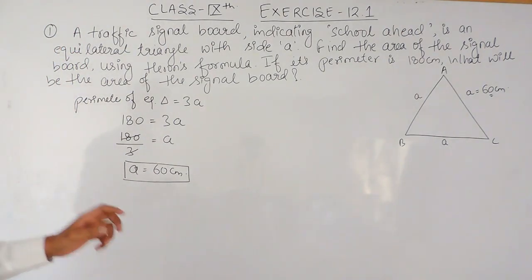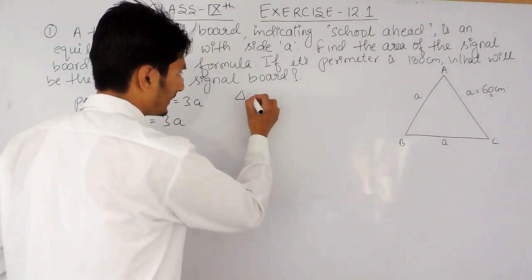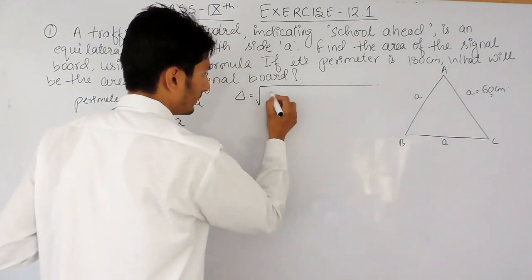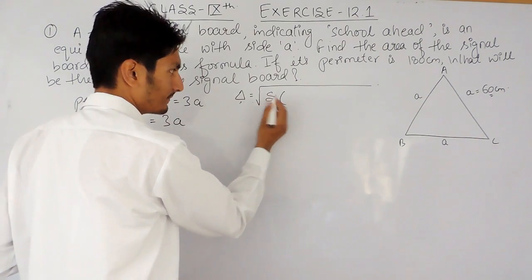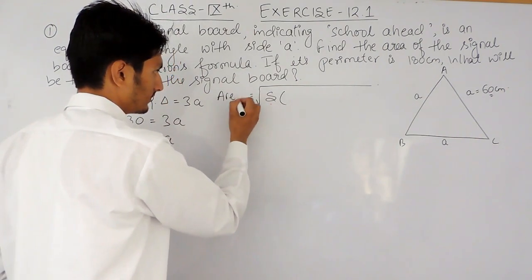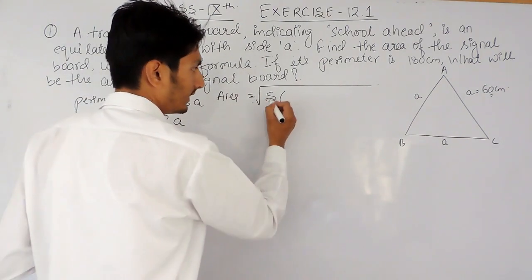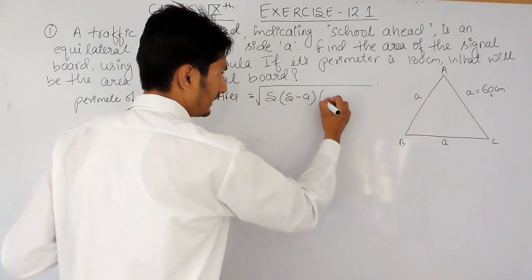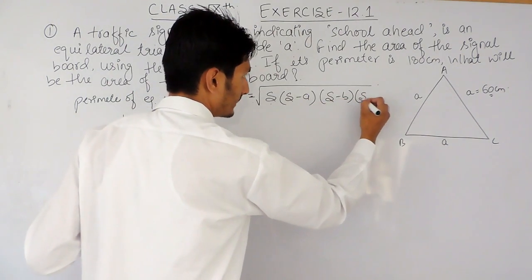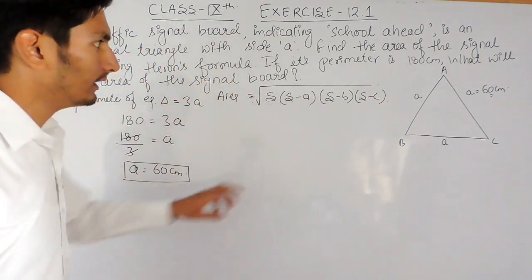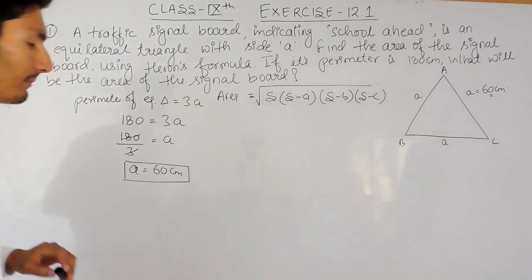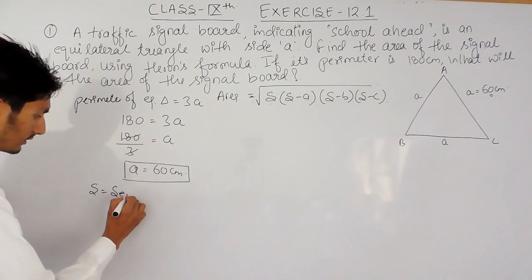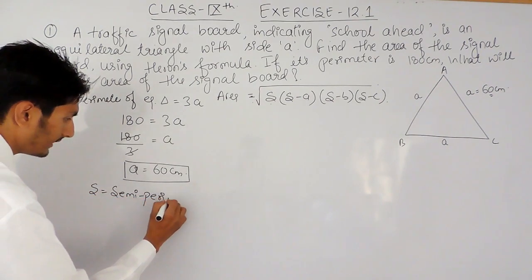Now we have to find the area of this triangle using Heron's formula. The formula is: Area = √(S × (S − A) × (S − B) × (S − C)), where A, B, C are the sides of the triangle and S is the semi-perimeter.